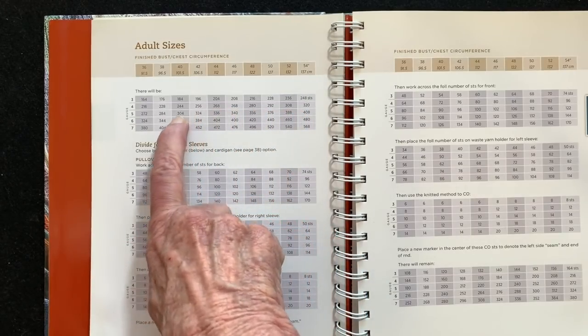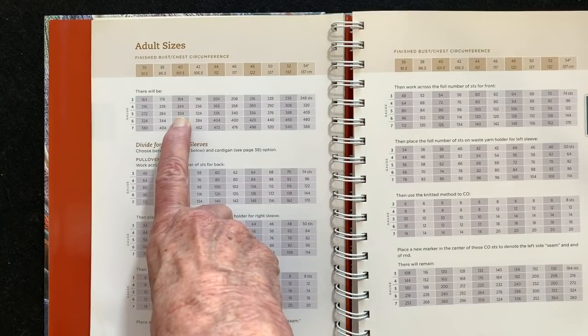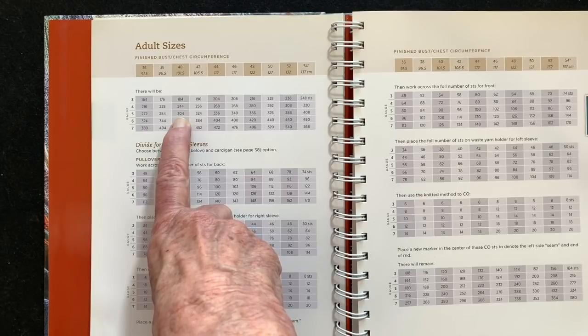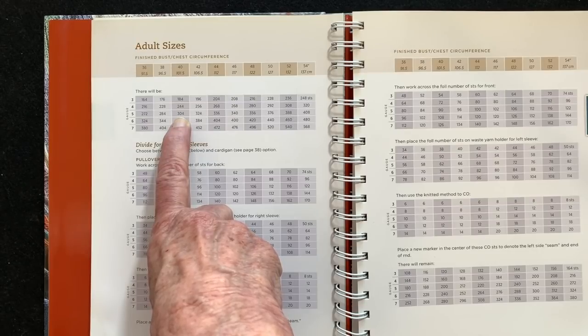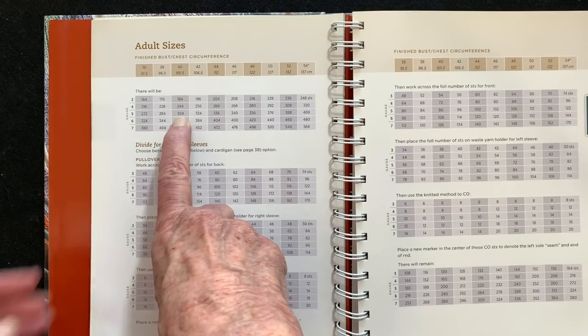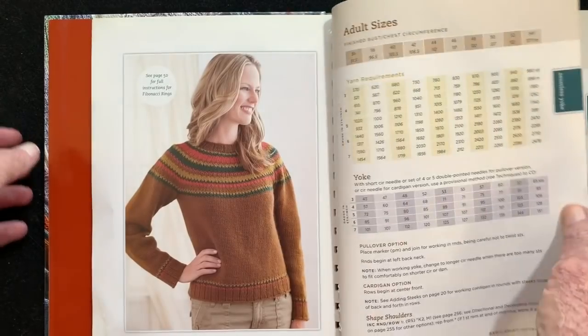So what we're going to do is just stay with size 40 and then we know that for the yoke we're going to have four increase rounds. And if we take 12 and divide it by four that is three stitches that we need to increase extra on each of those increase rounds. So when she says let's go back to some of the increase rounds for example the first increase round.